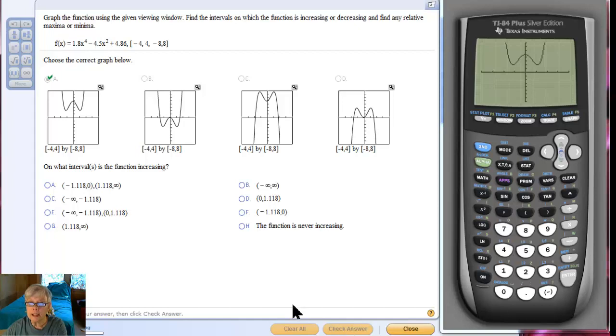On what interval is the function increasing? I may have to find the minima. Clearly the function is going up from that relative minimum to this relative maximum. And it's also going up from this relative minimum all the way up forever. It looks to me like that could be negative 1.118. That definitely is x equals 0. And then positive 1.118 to infinity.